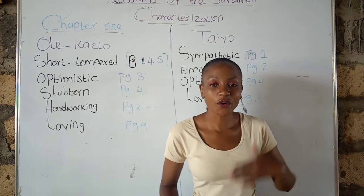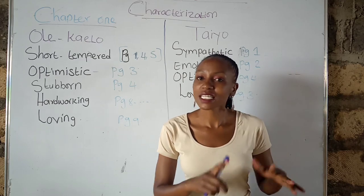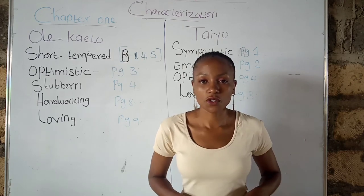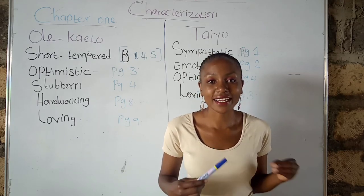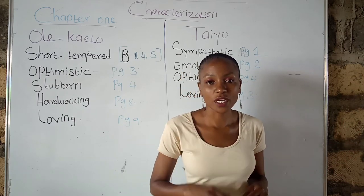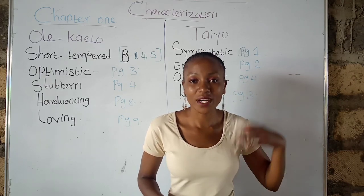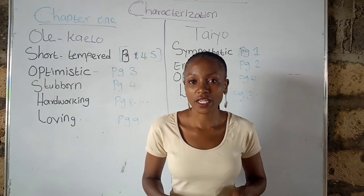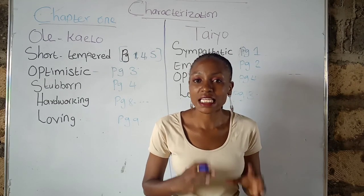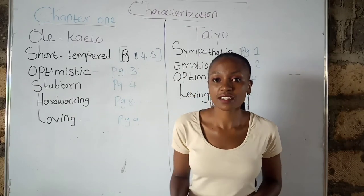We are going to start with Chapter One. In Chapter One we have five characters: Ole Kyalo, Mama Milanoi, Tayo, Resian, and Uncle Simiren. Before we go to the book, I want to teach you three things: how to identify a character trait. There are three ways — one, what the author says about that character; two, what the character does (their actions); three, what other characters say about that specific character.